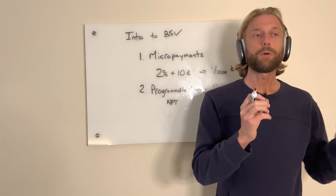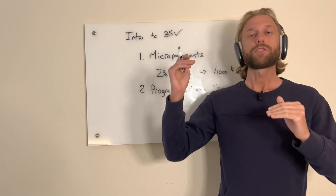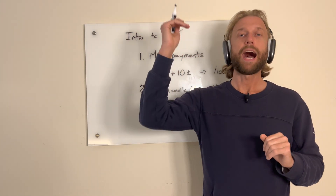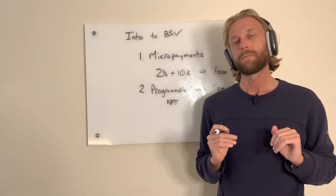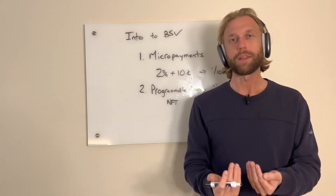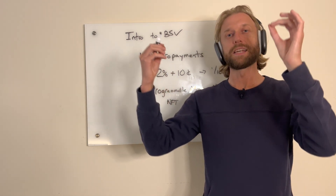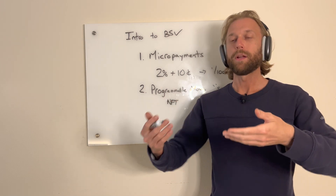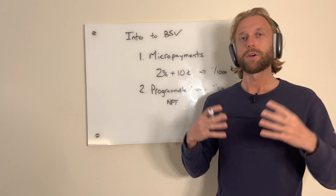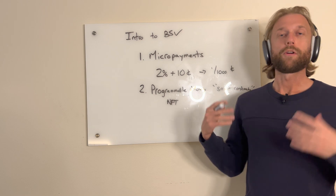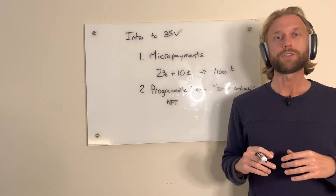People used to say Bitcoin Script was too complicated to do these things. Now there's a company called sCrypt that has built a higher-level human-readable language that compiles into Bitcoin Script. Bitcoin Script was never meant to be where you write the program — it's more like assembly language. We're supposed to design human-readable languages that compile down to Bitcoin Script. sCrypt has done that, making programmable money and smart contract functionality super easy.